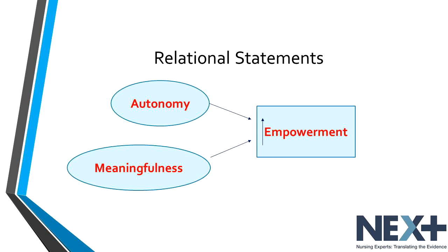Let's say that you are reading a study about nurse empowerment. Empowerment is the phenomena or an area of interest within the study. It could be that the phenomena or topic may exist alone. However, if it is a topic that has multiple elements, we would want to know what those elements or key terms are and how they are defined. So in this example, an author may define the phenomena of nursing empowerment as occurring from a sense of autonomy and meaningfulness.